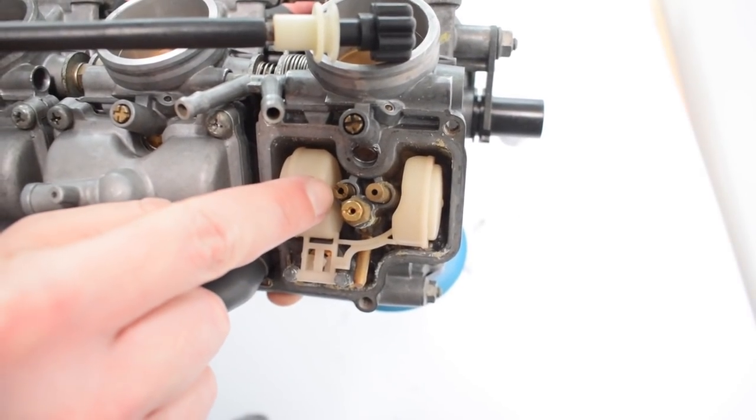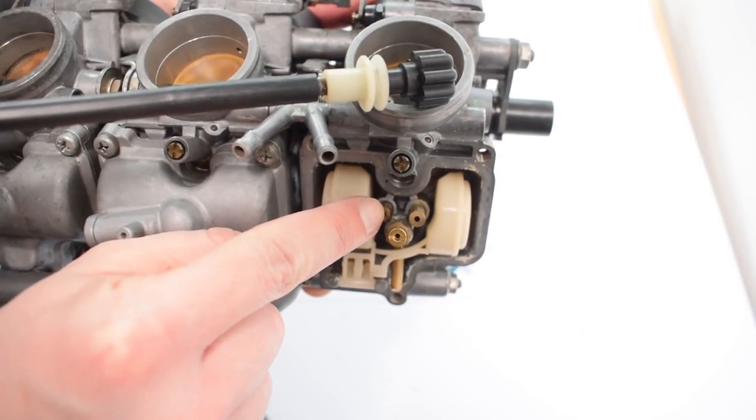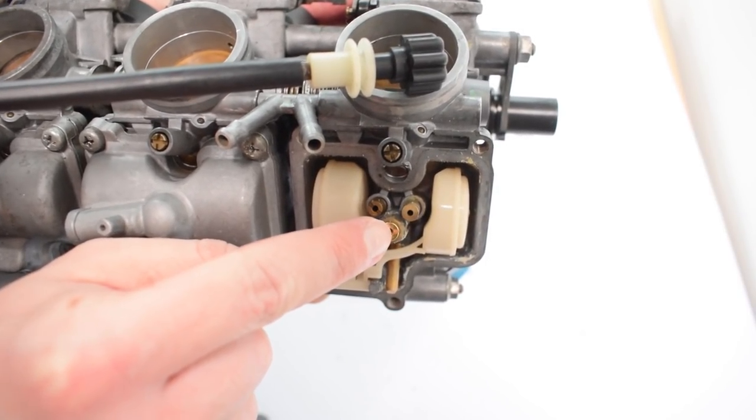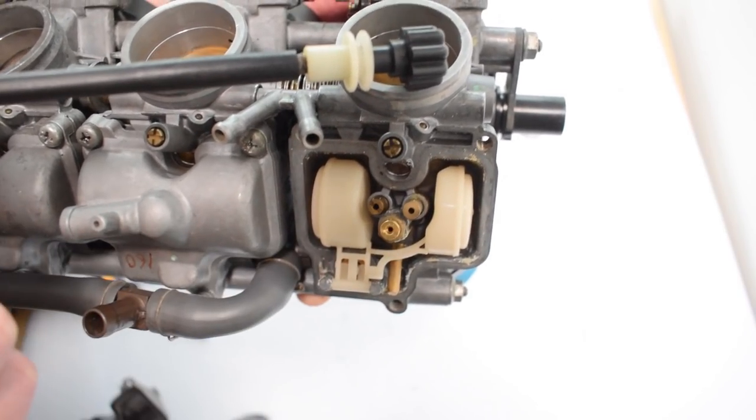Here we have our pilot jet right here and here we have our main jet. Now let's take a look at what happens inside the carburettor during idle and when the throttle is opened.